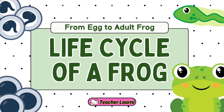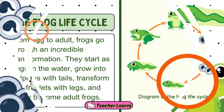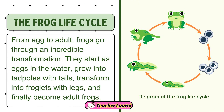Let's dive into the life cycle of a frog. From egg to adult, frogs go through an incredible transformation. They start as eggs in the water, grow into tadpoles with tails, transform into froglets with legs, and finally become adult frogs.